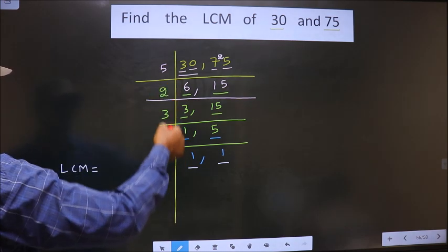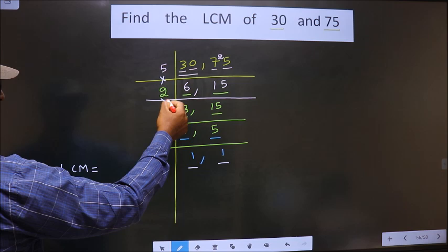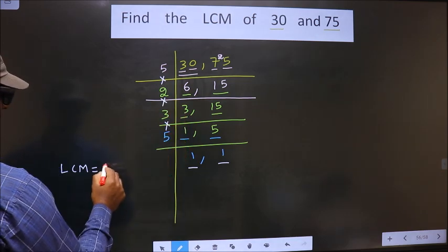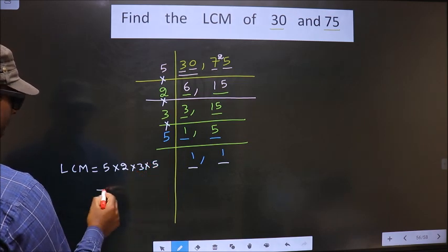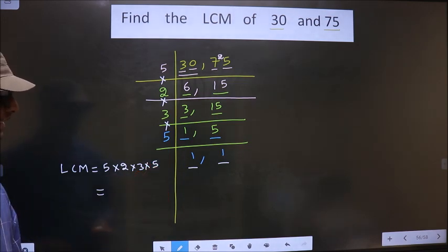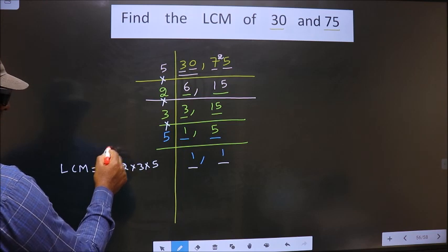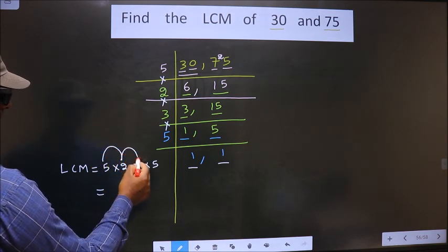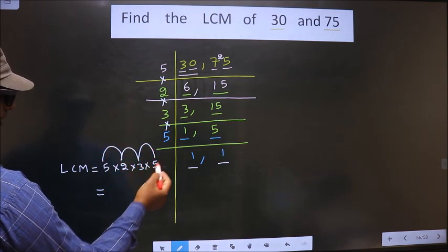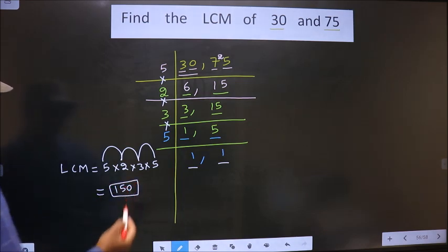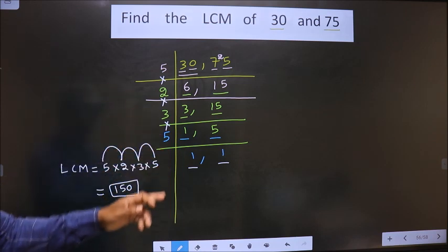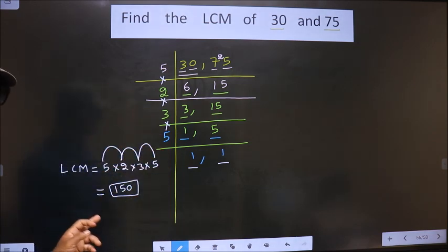LCM is the product of these numbers, that is 5 into 2 into 3 into 5. So let us multiply all these numbers. 5 into 2 is 10, 10 into 3 is 30, 30 into 5 is 150. 150 is our answer. Am I clear?